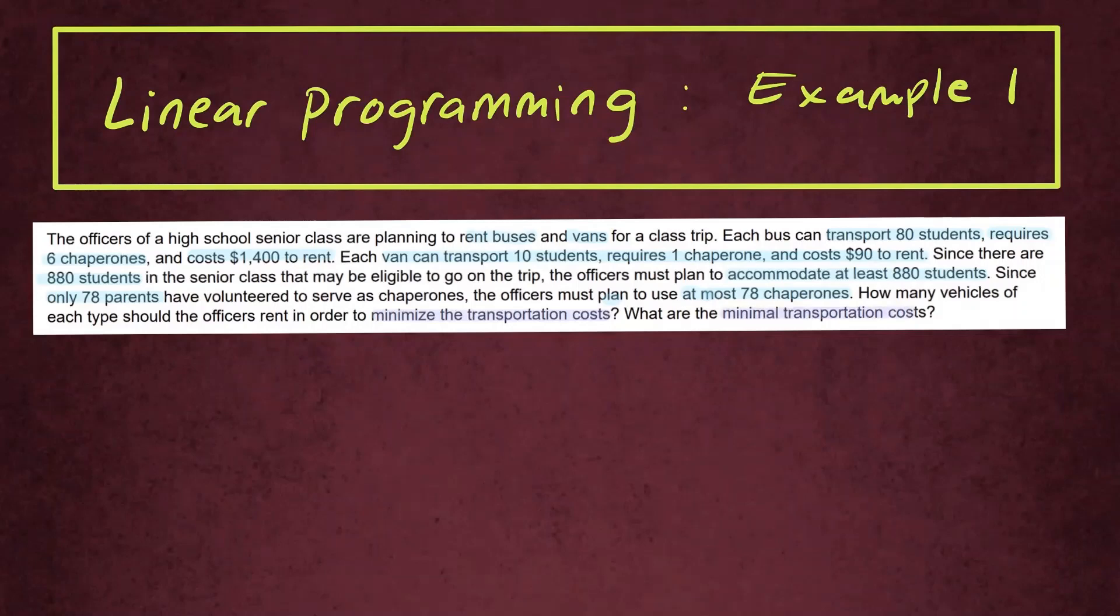The last part of this scenario is very important because that information will help us create the objective function, the function that you're going to either maximize or minimize. Here we're going to be minimizing. So this is the part that will give us the objective equation. So that will be the cost of this transportation. Let C stand for cost.